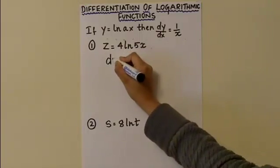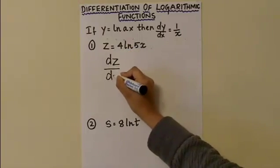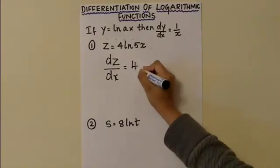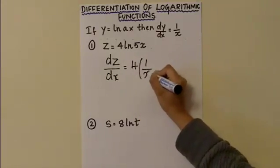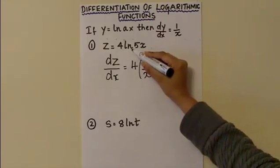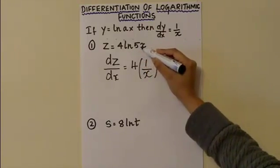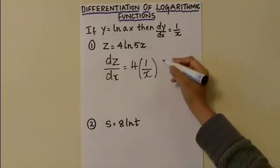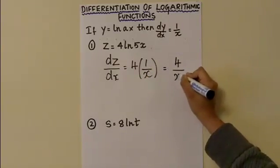So dz over dx is equal to 4 times 1 over x, where 1 over x is the differentiation of the logarithmic function ln 5x. So 4 times 1 over x is 4 over x.